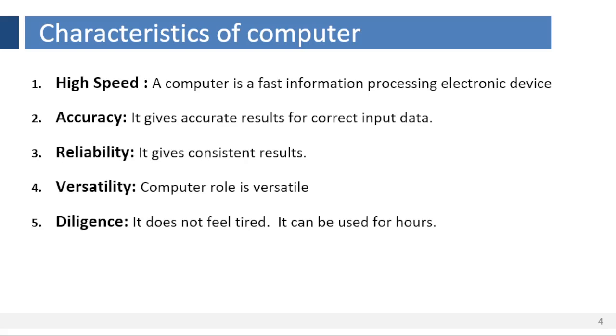Now let us see what are the common features of computer system. High speed: A computer is a fast information processing electronic device. It carries out all sorts of computations within a fraction of a second. It executes millions of instructions per second.